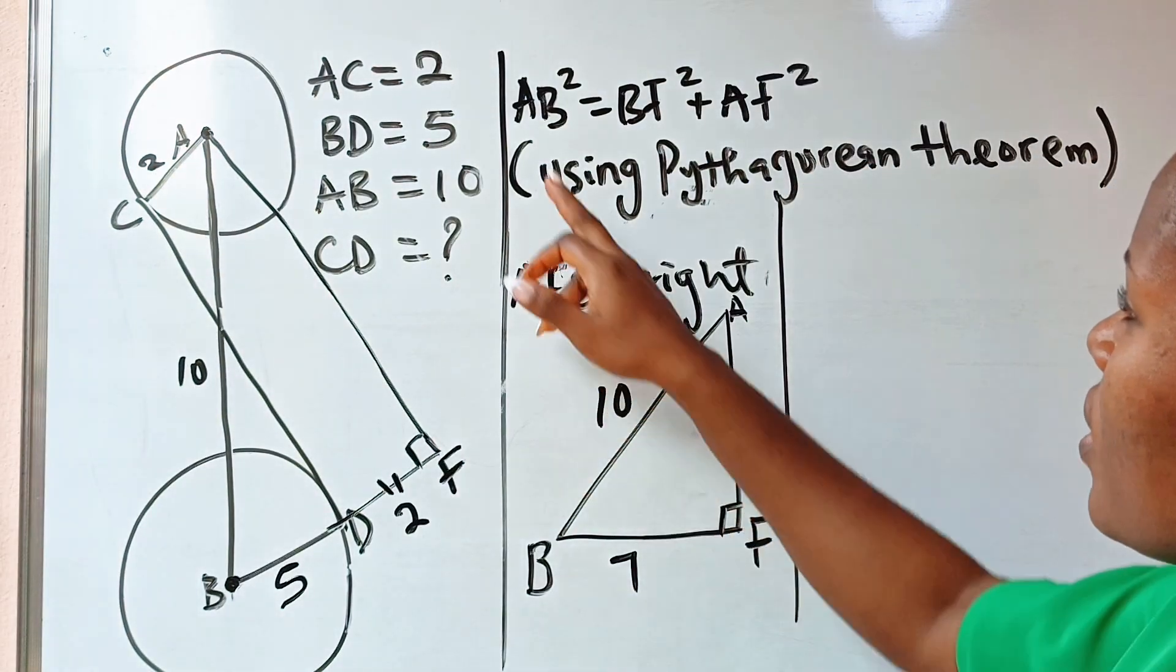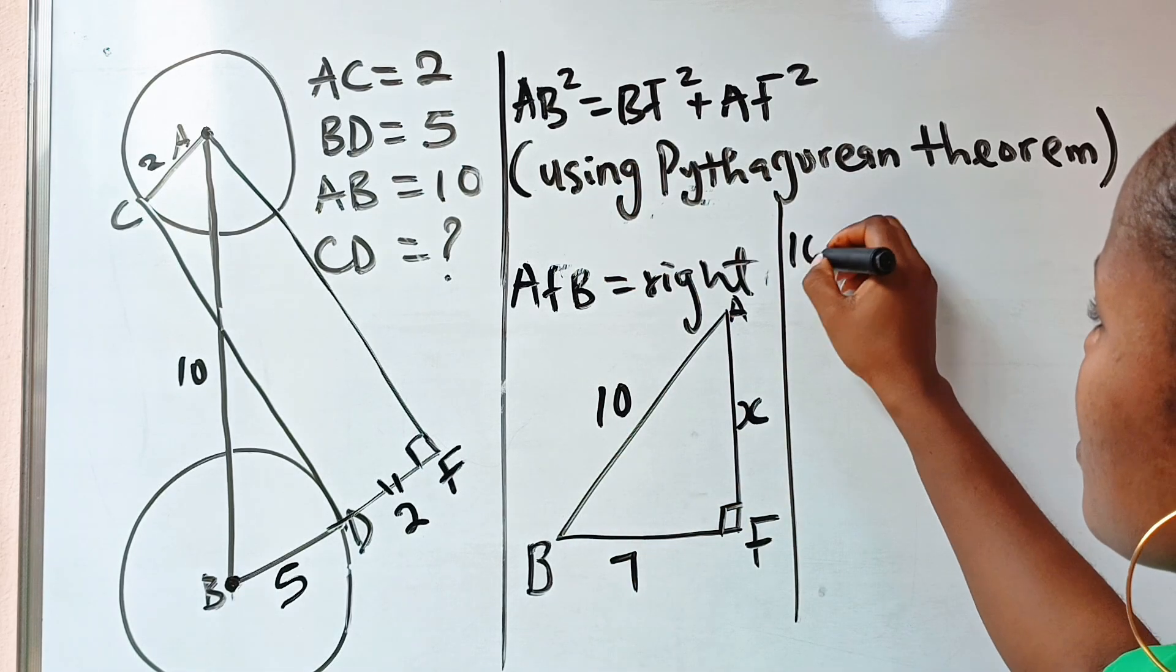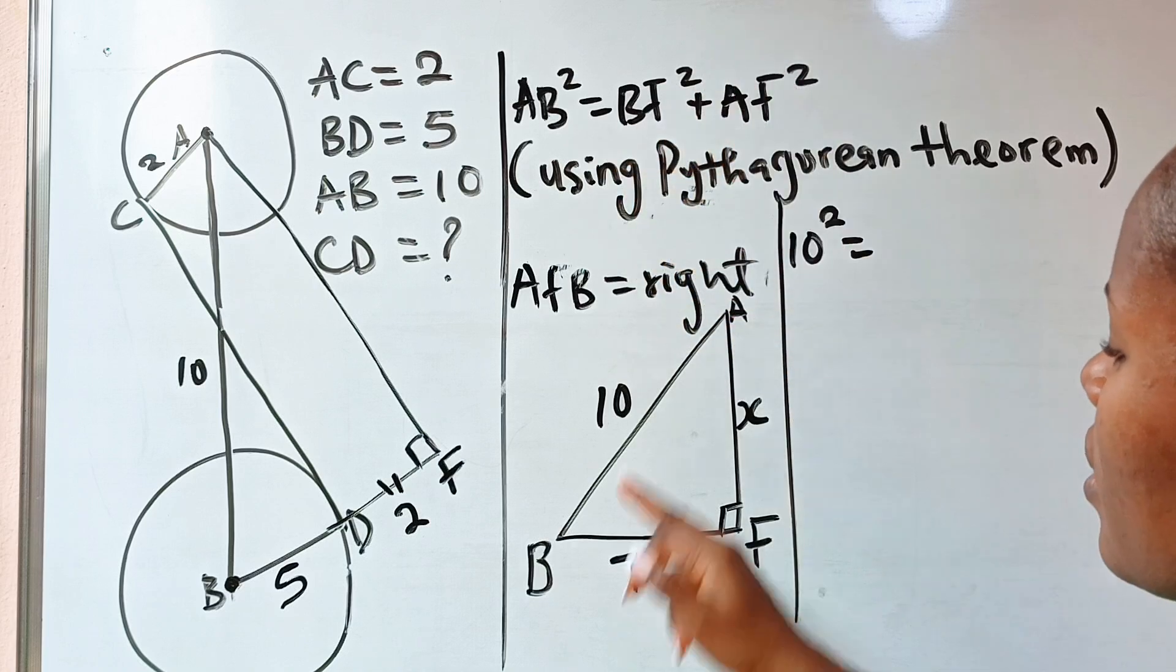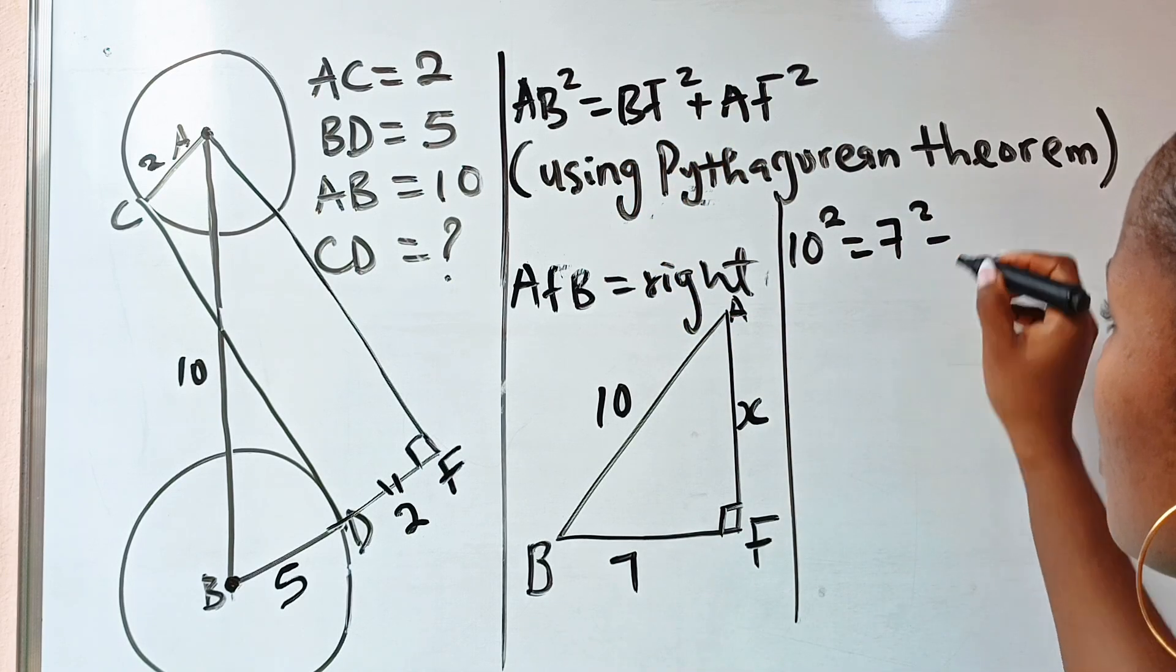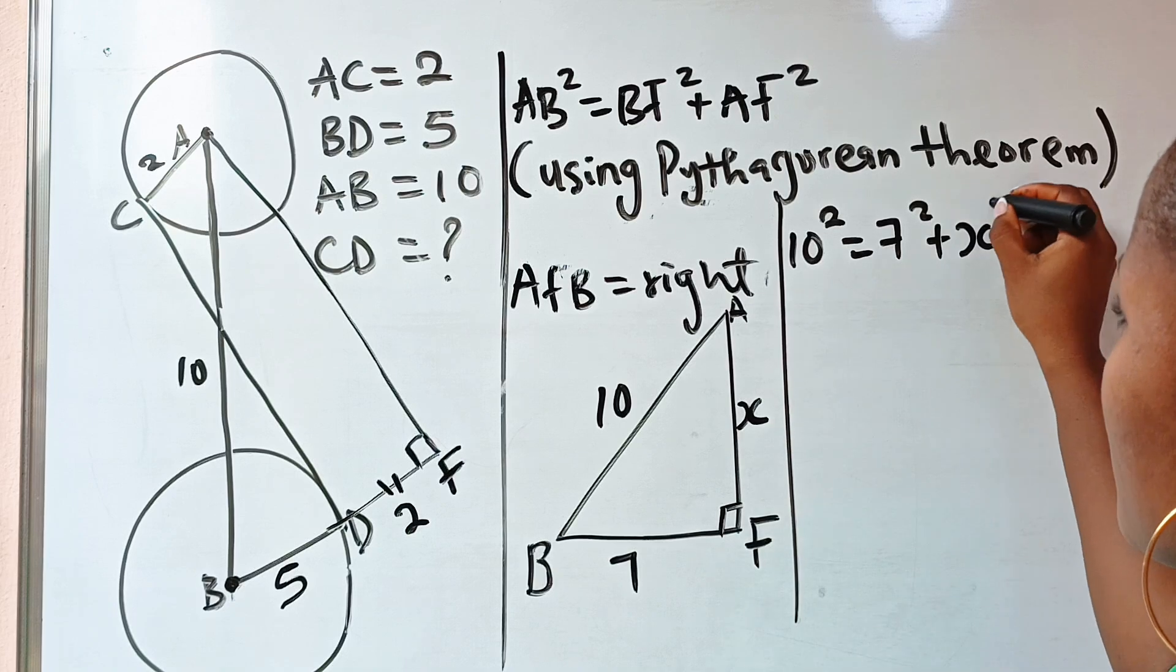All right, so that means AB squared, which happens to be 10, right, is equal to BF squared, that is 7 squared, plus AF squared, which is x squared.